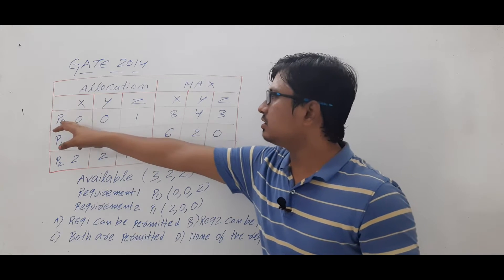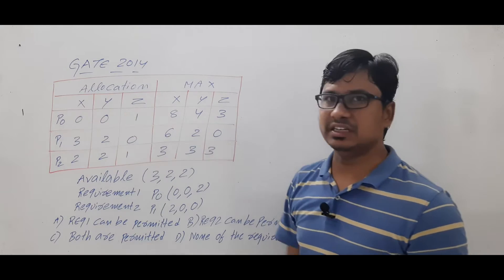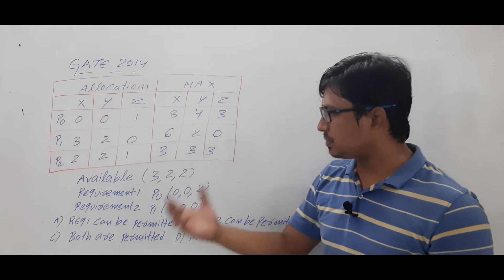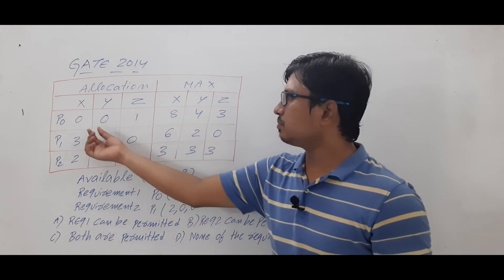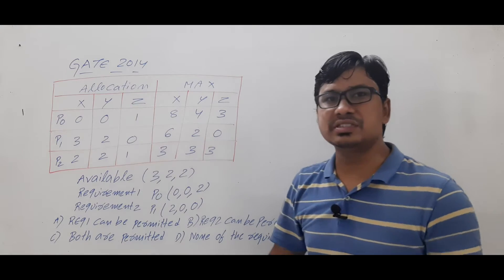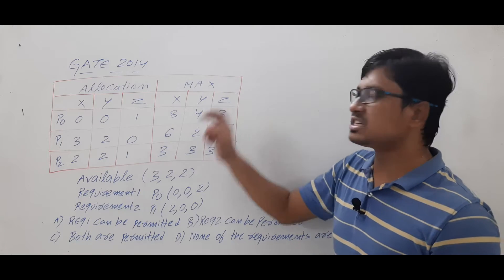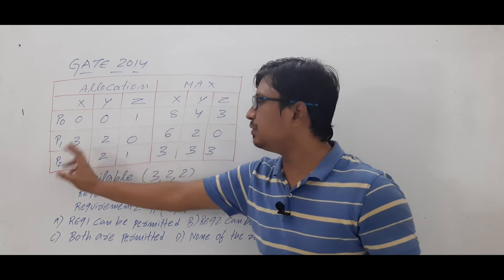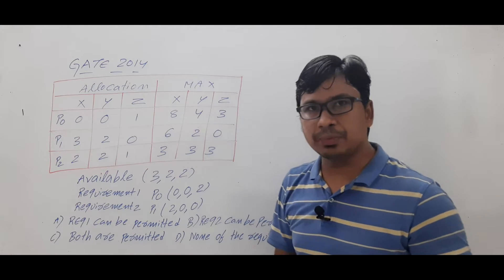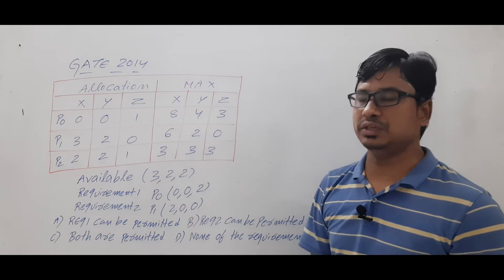There are three processes: P0, P1, and P2, and three types of resources: X, Y, Z. Two matrices are given — the allocation matrix and the maximum matrix. The allocation matrix shows that for process P0, zero units of resource X, zero units of resource Y, and one instance of resource Z have been allocated. It needs a maximum of eight instances of X, four of Y, and three of Z to complete its task. After allocating resources to P0, P1, and P2, the availability of resource X, Y, Z is three, two, and two instances respectively.